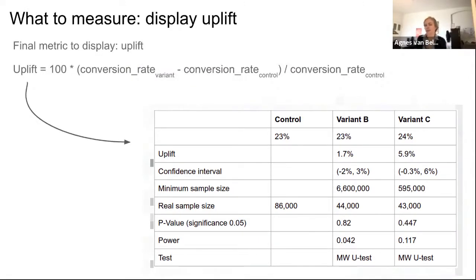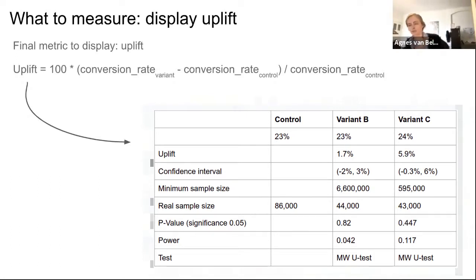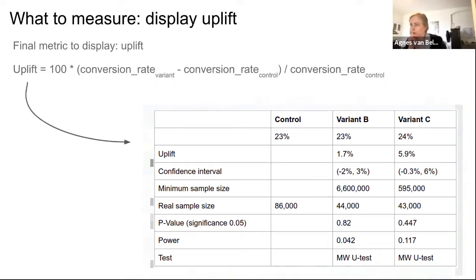It is not very helpful to display two conversion rates side by side. You are mostly interested in how well a variant performs compared to the control group. This is expressed in terms of uplift: the conversion rate of the variant minus the conversion rate of the control, divided by the conversion rate of the control, times 100 to make it a percentage. For example, variant B is about 1.7% better and variant C about 6% better than the control group.